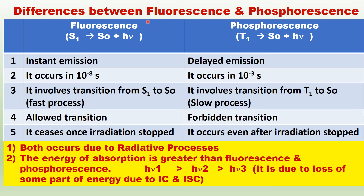Both fluorescence and phosphorescence are radiative processes — both emit light radiation. Fluorescence involves the transition from the first excited singlet state to the singlet ground state with the emission of light. Phosphorescence involves a transition from the triplet state to the ground singlet state with the emission of light.